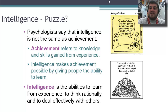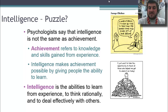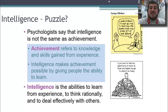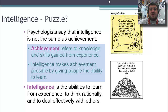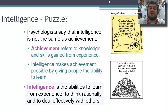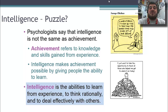Psychologists have come up with many different definitions of what intelligence is, and they can't all agree on it, but they agree on what intelligence is not — they say it is not achievement. Achievement is the knowledge and skills gained from experience. Intelligence makes achievement possible by giving people the ability to learn, think rationally, and deal effectively with others. That is our textbook definition of intelligence.